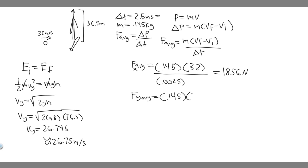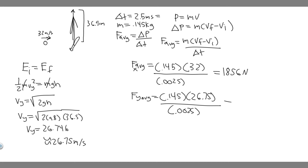Now we have the velocity in y. The ball goes from 0 to 26.75 m/s, so that's the change in velocity. Plugging in: 0.145 times 26.75 divided by 0.0025 gives approximately 1,552 newtons. That's the average force in the y direction.